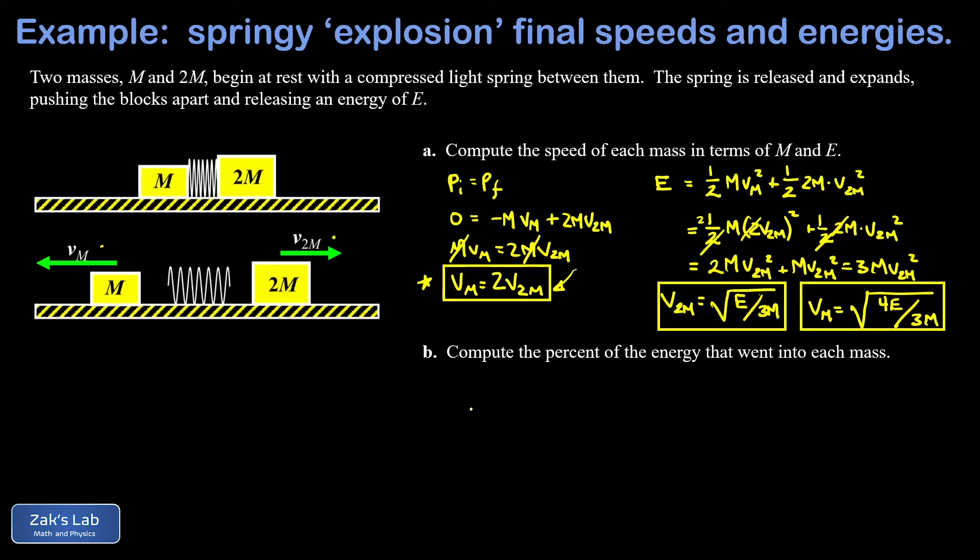And so it's useful here to go back to our original expression of the total energy in the system. The first term there is the kinetic energy in the smaller mass m and the second term was the kinetic energy in the larger mass 2m. So the kinetic energy in that smaller mass is one half times m times vm squared and now I can go back to my solution for vm.